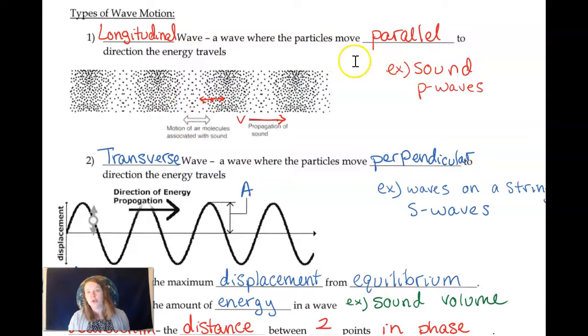So sound is an example of a longitudinal wave we're going to talk about a lot. P waves in earth science are also longitudinal waves. These are also known as pressure waves.